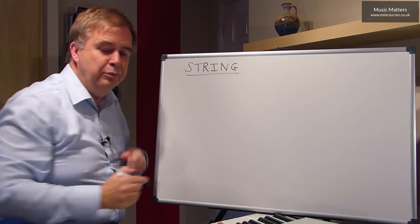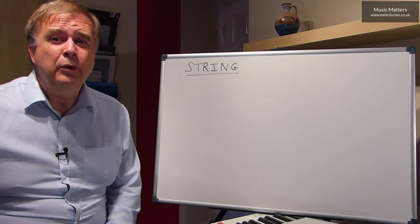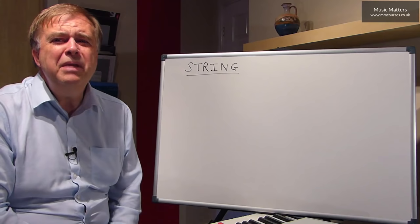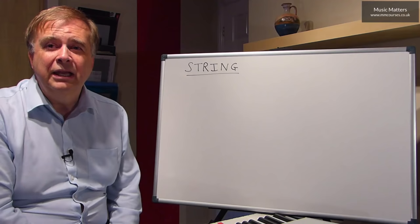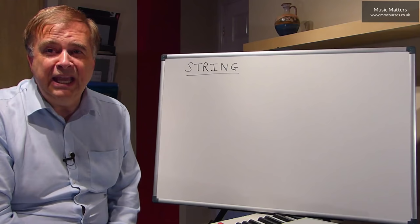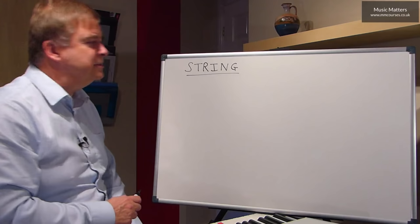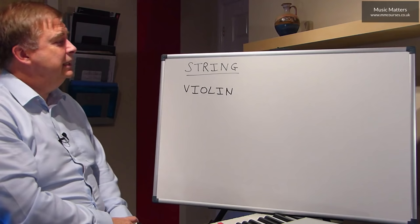You can probably think of quite a number of string instruments like guitars. You might even think that the piano's a string instrument — it's got strings in it. But we're going to talk about what we call the standard orchestral instruments, the main instruments that you meet in the orchestra. Some instruments are there by invitation; instruments like the guitar are not normally in the orchestra. Now the highest member of the string family is the violin, and the violin plays in the treble clef.